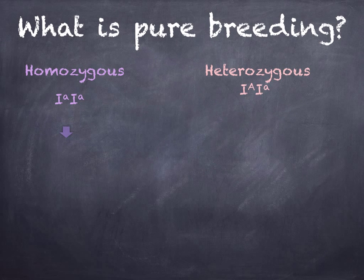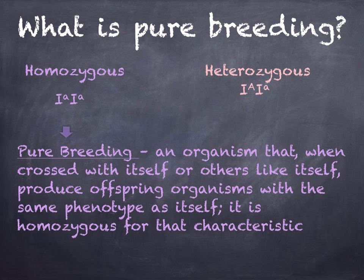Lastly, what is purebreeding? Purebreeding is when an organism, when crossed with itself or others like itself, produces offspring with the same phenotype as itself — so it's homozygous for that characteristic. For example, if you cross a homozygous plant with another homozygous plant, the result will be a homozygous plant. So if you cross IA with IA, you get IA — that's purebreeding. We're going to have a look at test crosses in another topic.